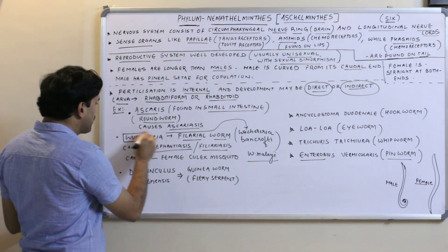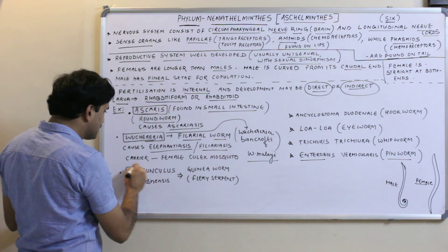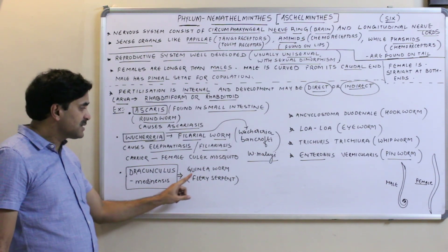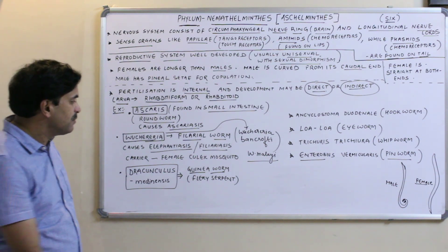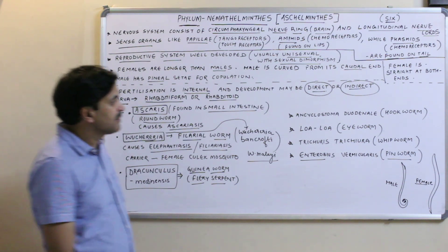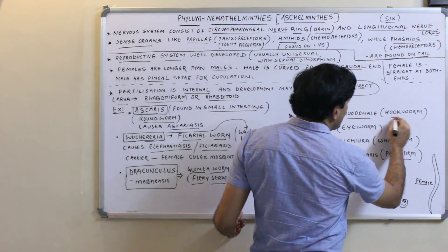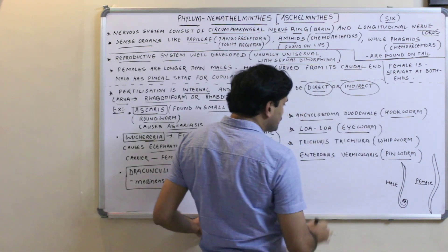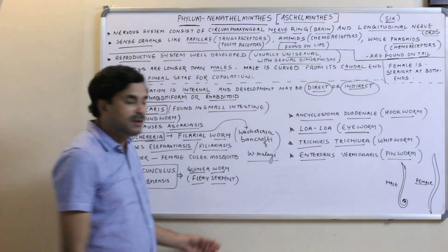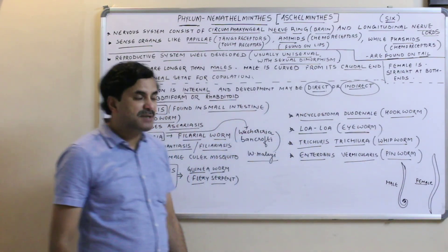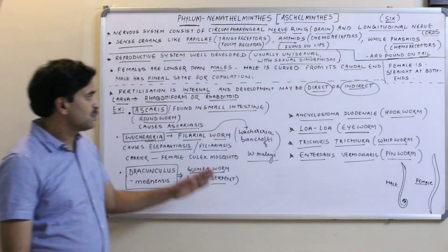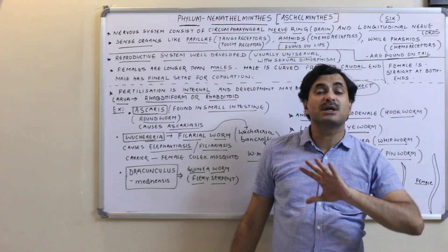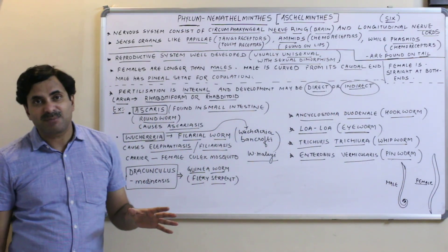Dracunculus medinensis is called the Guinea worm, also called the fiery serpent. Ancylostoma duodenale is called the hookworm. Loa loa is called the eyeworm. Trichuris (Trichuris trichiura) is called the whipworm, and Enterobius vermicularis is called the pinworm. These are the popular examples of Phylum Aschelminthes.